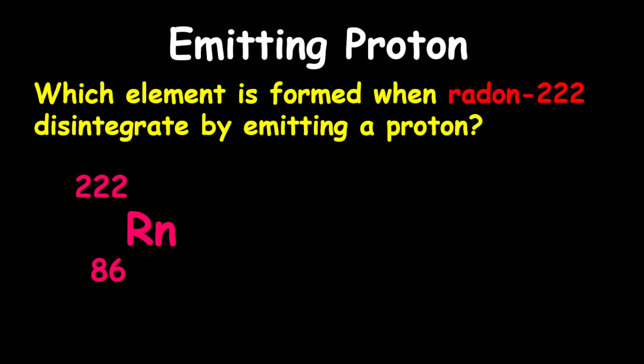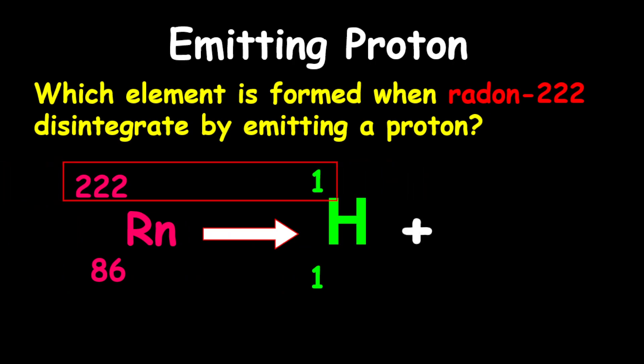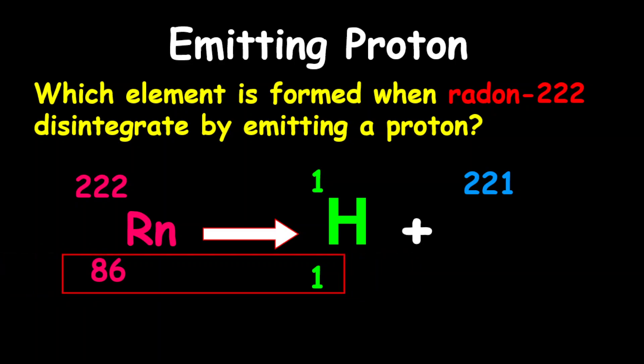Now radon has a proton number of 86. Radon emits a proton. So therefore the new element will be one from 222 to get our mass, which is 221. One from 86 will give us 85. Looking at the periodic table, you will realize that this element is astatine.